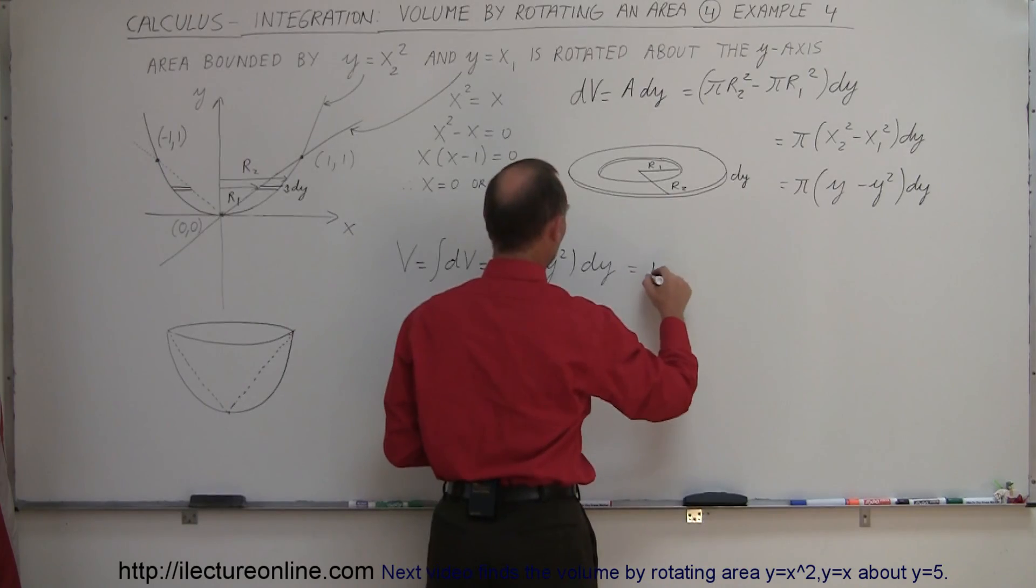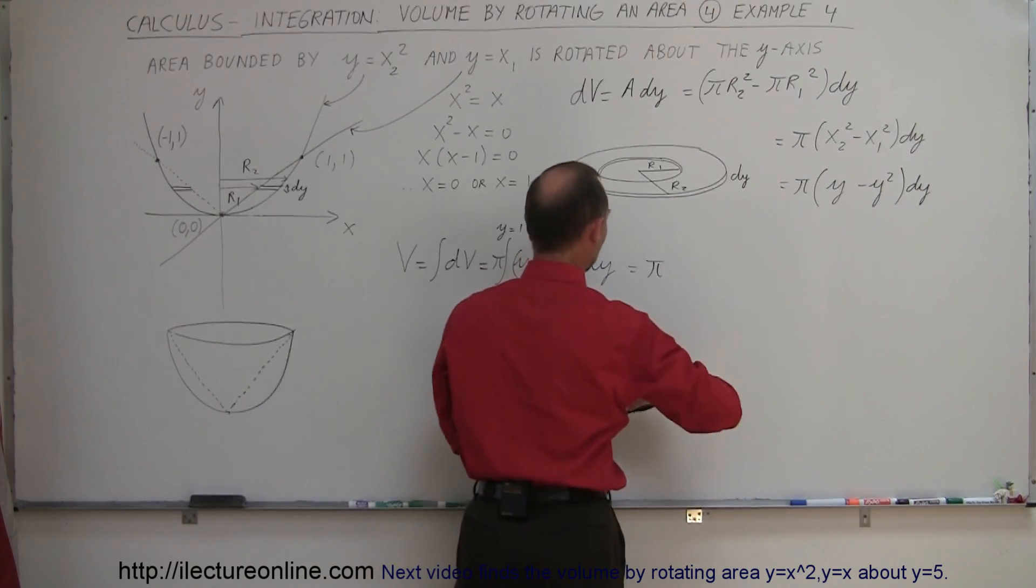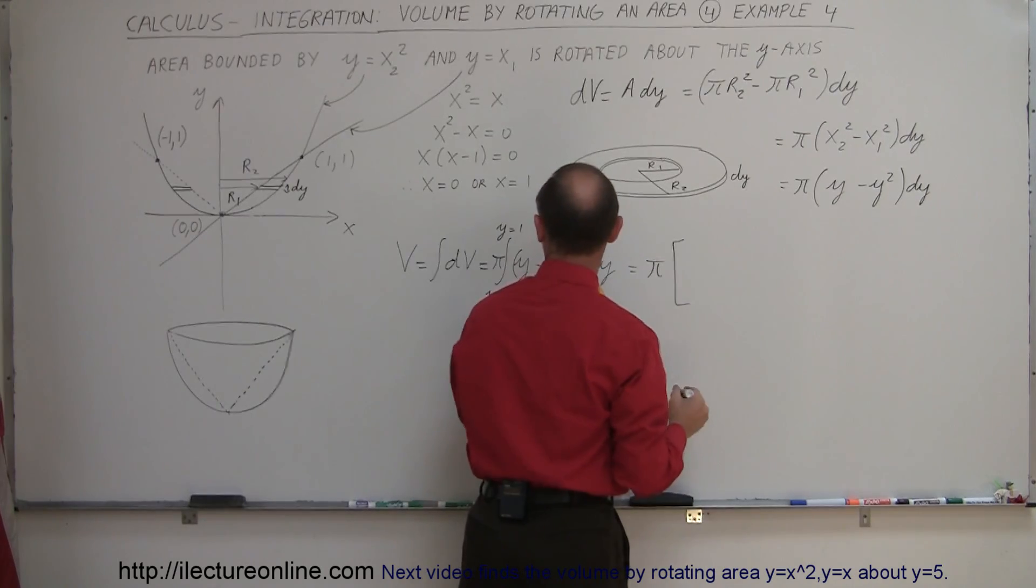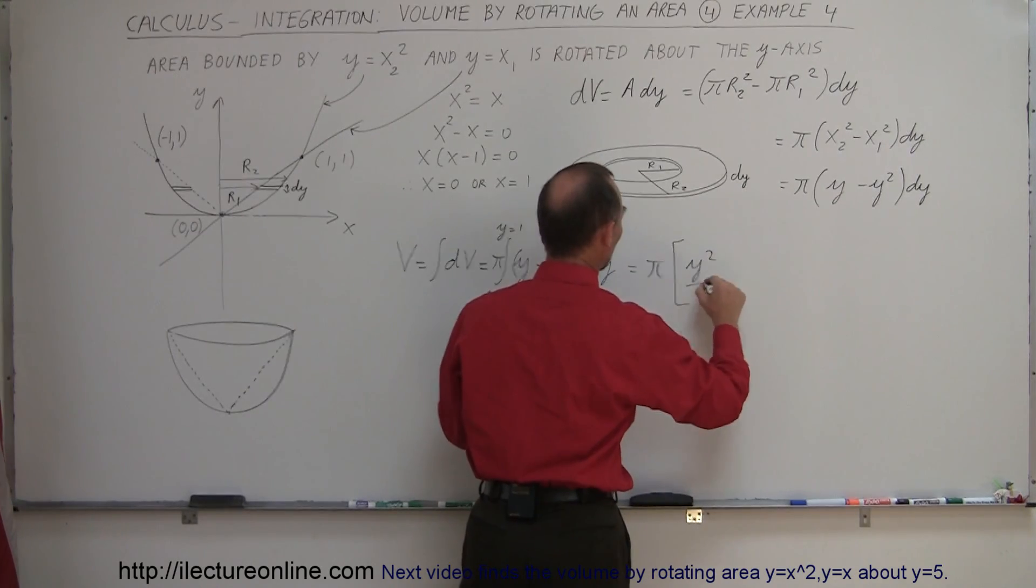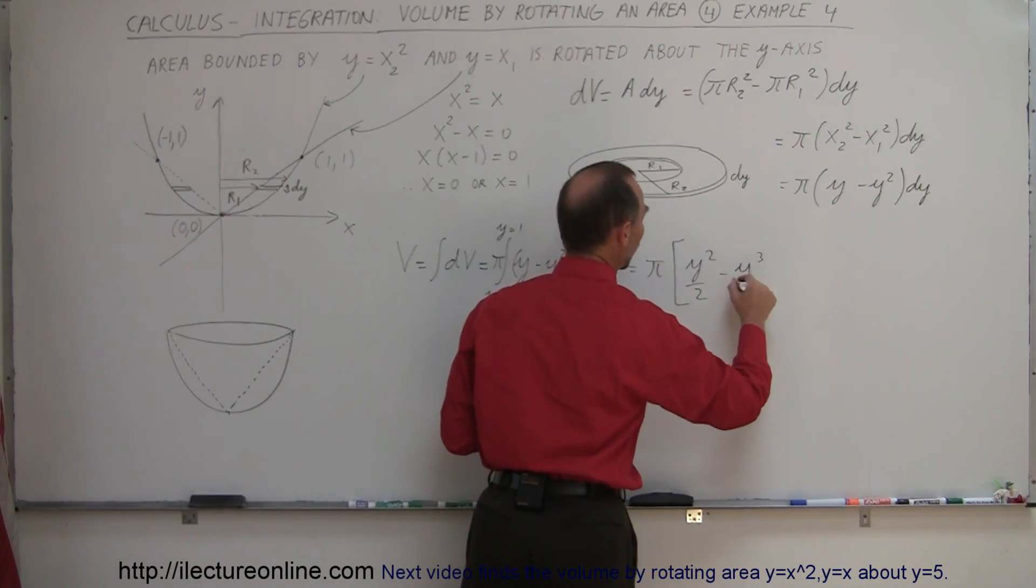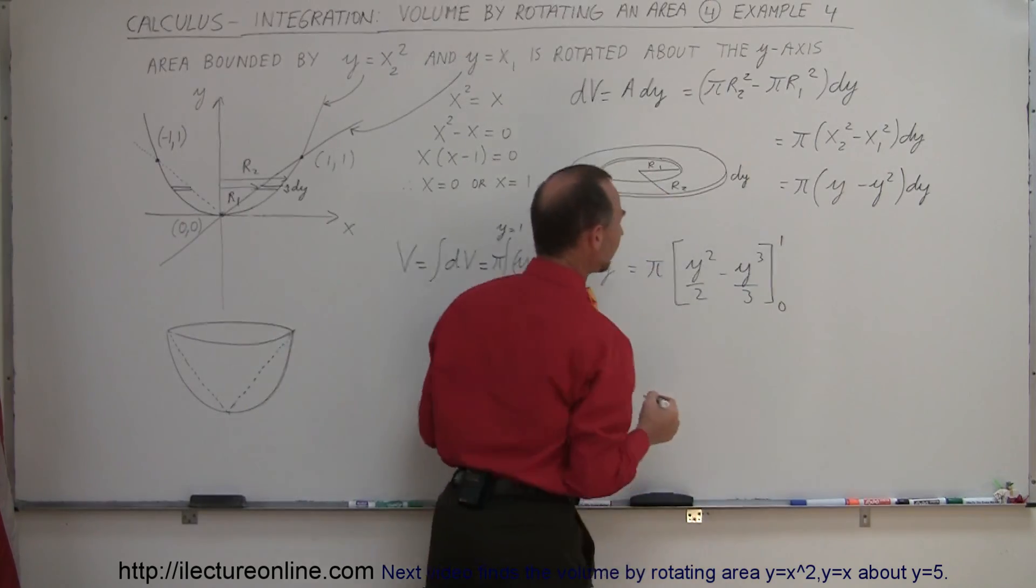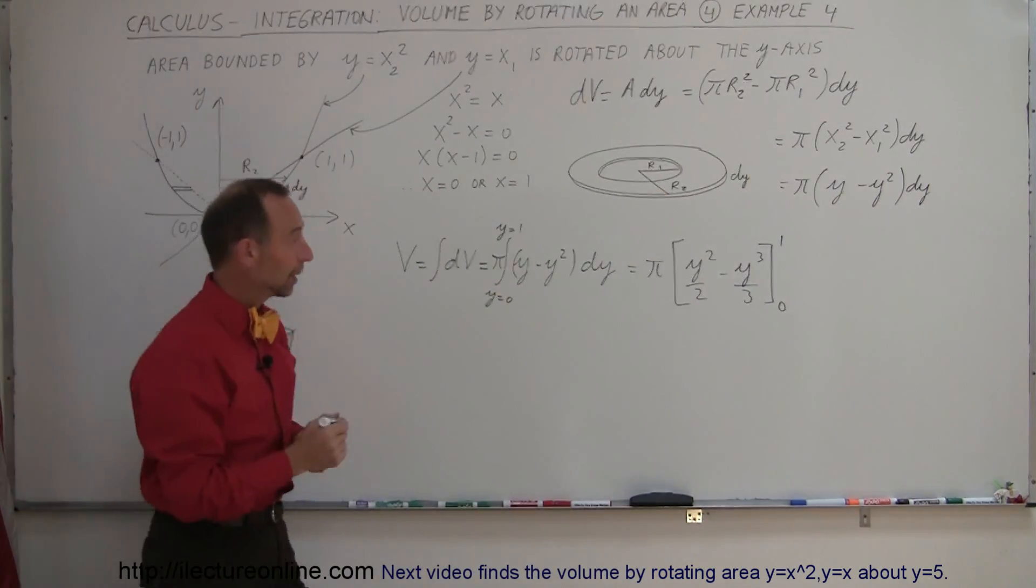So this is equal to π times, and I guess we don't do it like that, we use brackets. So we go y squared over two, so you add one to the exponent, divide by the inner exponent, minus y cubed over three, and the limits of integration from zero to one. So now we go ahead and plug in the upper limit.